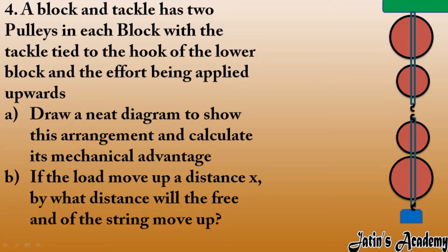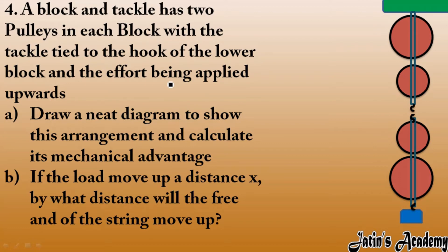The 4th question: a block and tackle has two pulleys in each block. The tackle is tied to a hook of the lower block, meaning the string starts from the lower block going upward, and effort is applied in the upward direction. This is a case of inconvenient direction. We have to draw a neat and clean diagram to show this arrangement and calculate the mechanical advantage.